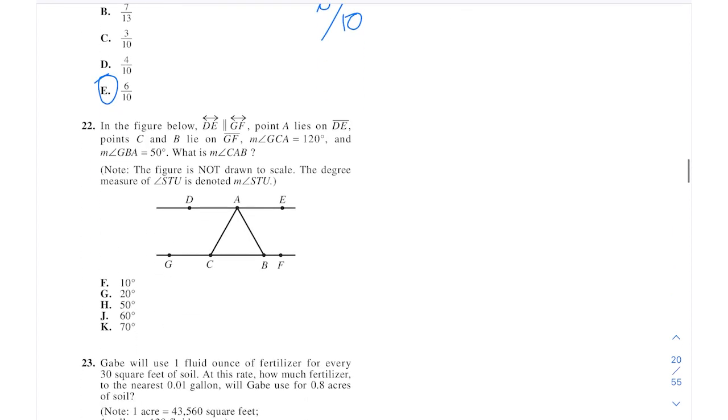Let's take a look at 22. Here in the figure, they want to know the measure of CAB. So that's this one. That's what we're trying to find. GBA is 50. And they tell us these two lines are parallels. So anytime we can transfer info, I always try to do that right away. So that would also be 50. GCA is 120, which means that would be 60 in here. That's also 60 up here. So 50 and 60 is 110. All this is 180. 180 minus 110 is 70.